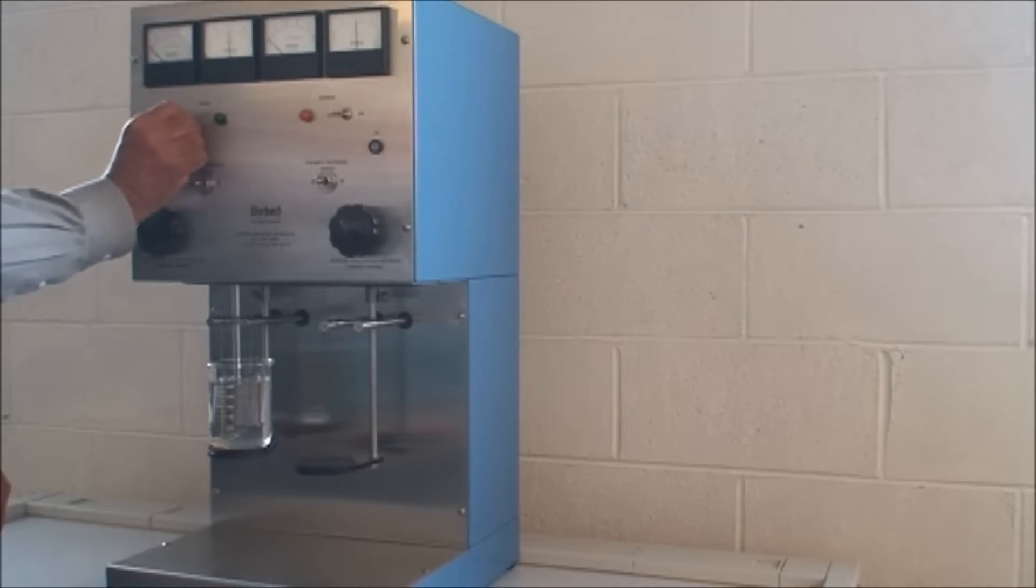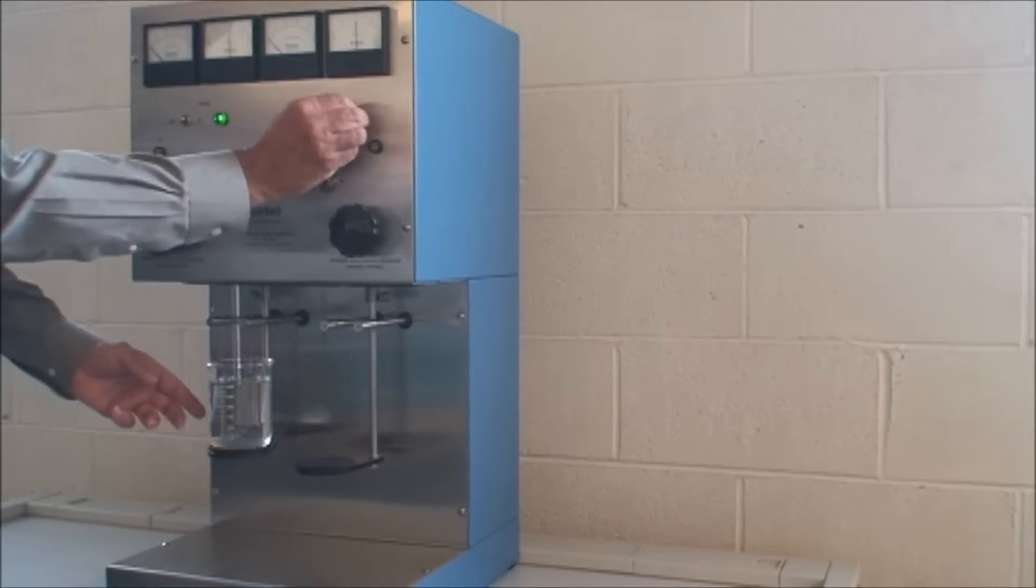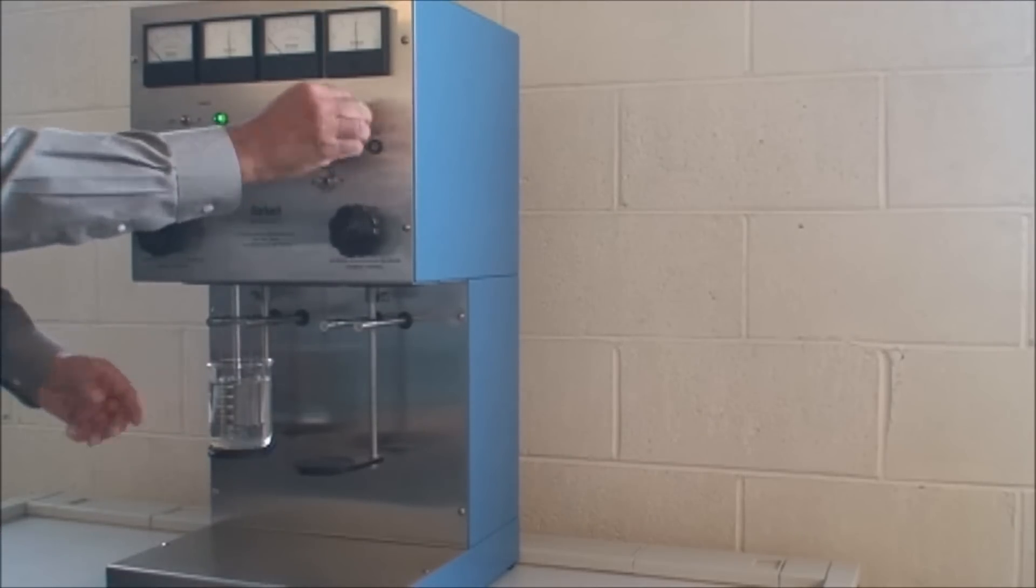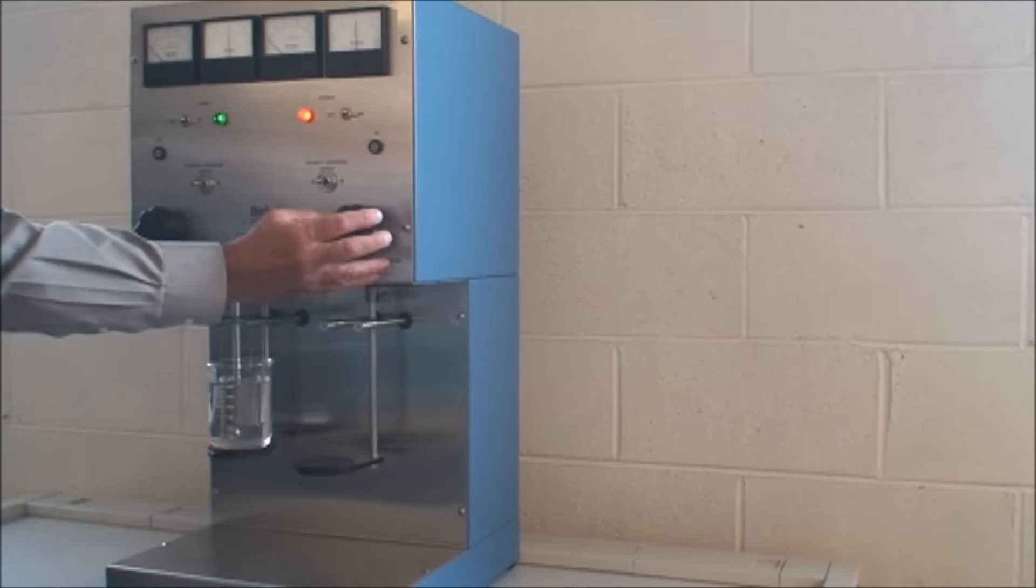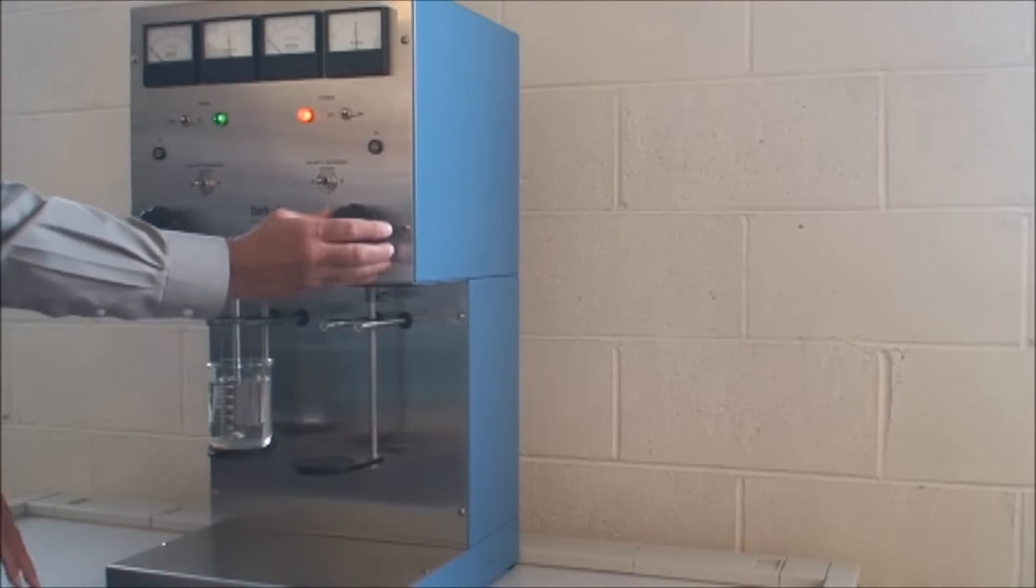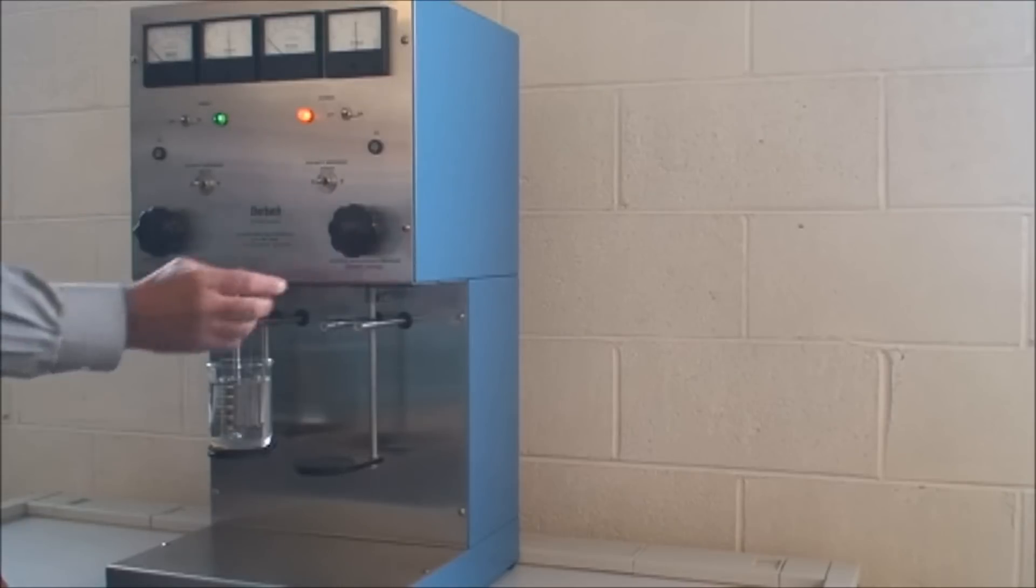You would turn the machine on, turn the stirrer on, and then adjust for the amperage and voltage. Typically you want about 40 milliamps per square centimeter of electrode surface area.